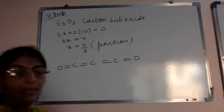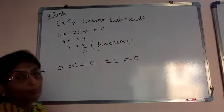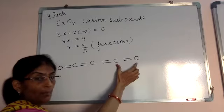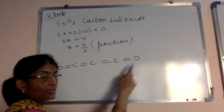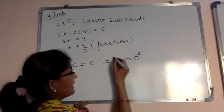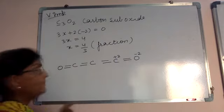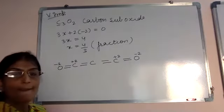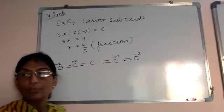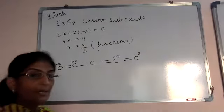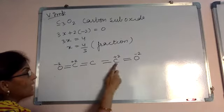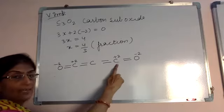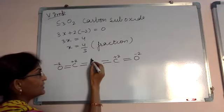The structure of C3O2 is: O double bond C double bond C double bond C double bond O — a covalent polar bond. Oxygen is more electronegative, so oxygen gets minus 2 and the adjacent carbon gets plus 2. The central carbon is connected to 2 similar carbon atoms, so there is no electronegativity difference, and its oxidation number is 0.